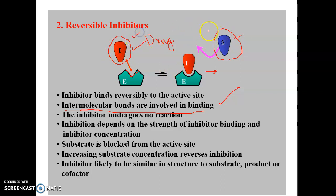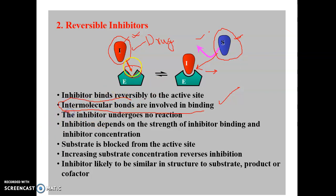Competitive inhibition occurs between the inhibitor and the substrate. The inhibitor readily goes and binds with the active site, occupying it so the substrate has no chance to bind — the substrate remains free. The chemical reaction does not proceed because the active site is unavailable. The binding mechanism involves intermolecular bonds between the drug molecule and the amino acid residues present at the active site, since enzymes are made up of proteins.